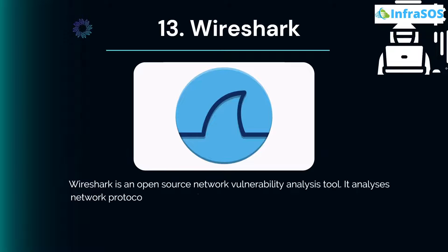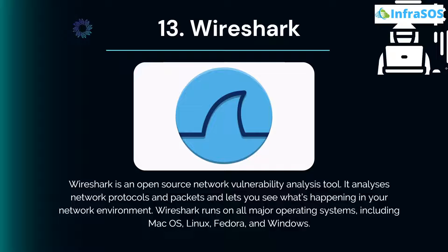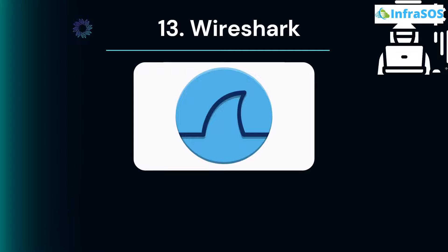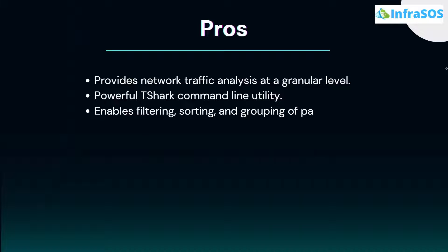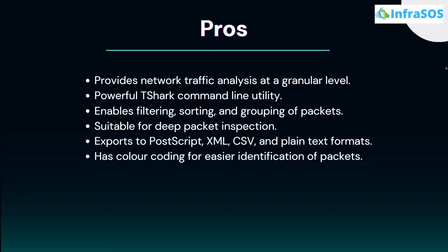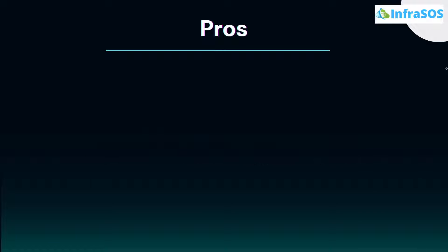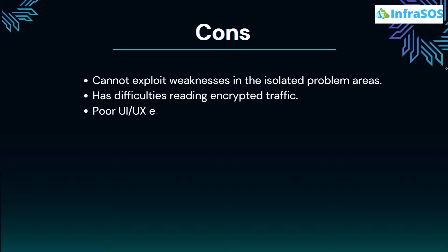At number 13 we have Wireshark. Wireshark is an open-source network vulnerability analysis tool that analyzes network protocols and packets, letting you see what is happening in your network environment. It runs on all major operating systems including macOS, Linux, Fedora, and Windows. Major pros include network traffic analysis at a granular level, a powerful TShark command line utility, and enabling filtering, sorting, and grouping of packets. Cons include inability to exploit weaknesses in isolated problem areas, difficulties reading encrypted traffic, and a poor UI/UX experience.